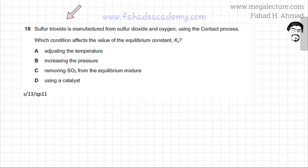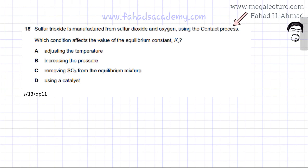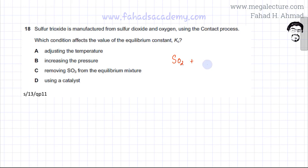The following question reads that sulfur trioxide is manufactured from sulfur dioxide and oxygen using the contact process. It's an equilibrium reaction of the contact process: SO2 reacting with O2 is in equilibrium with SO3. All of them are gases.